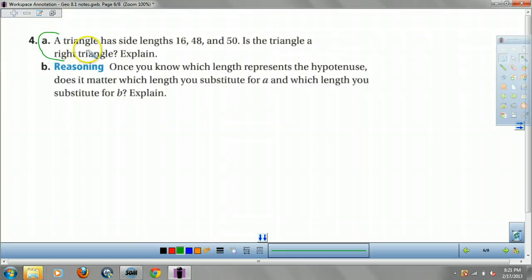Is this beast a right triangle? Explain. Well, here's how you do it. You take your two shorter sides, right? My 16. I'm going to square it. I'm going to add to it my 48 squared. Set the equal to 50 squared and see if it works.